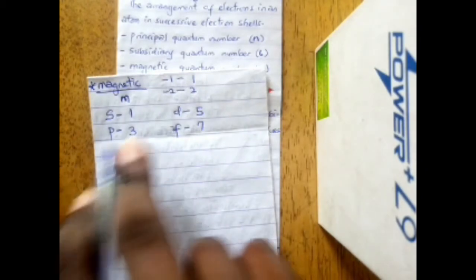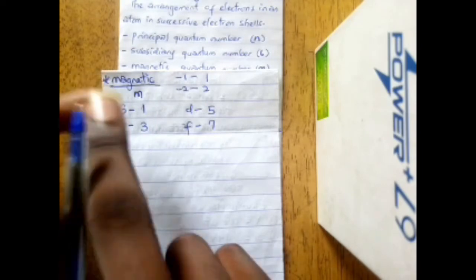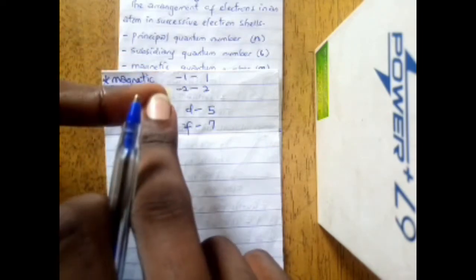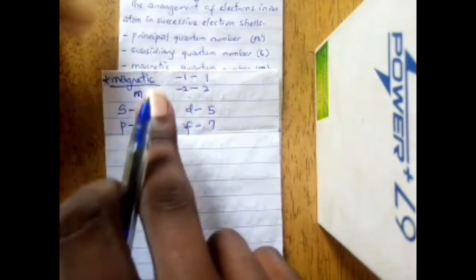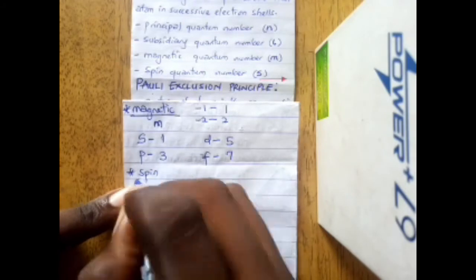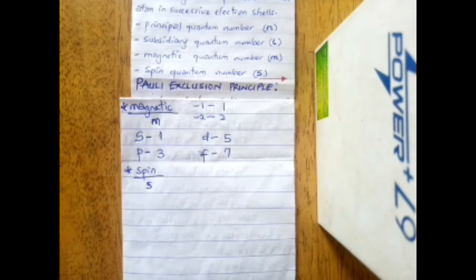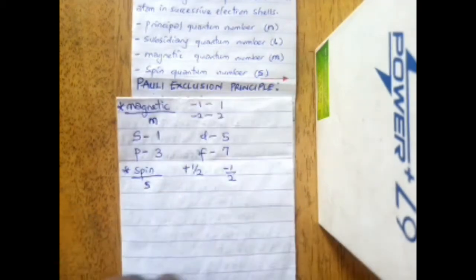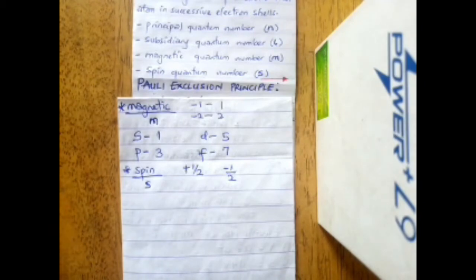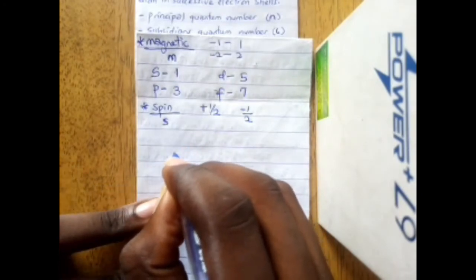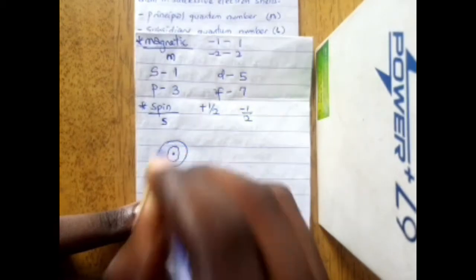To summarize the four quantum numbers: the principal quantum number gives the number of shells, the subsidiary quantum number gives the number of sub-shells, the magnetic quantum number gives the number of orbitals in each sub-shell. The spin quantum number simply describes the direction of rotation of electrons in orbitals — either positive or negative spin.